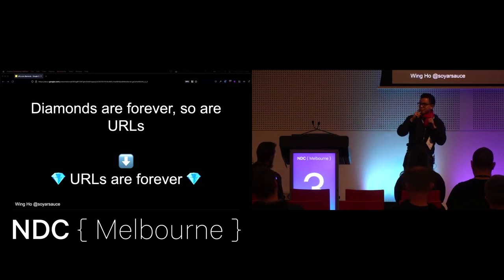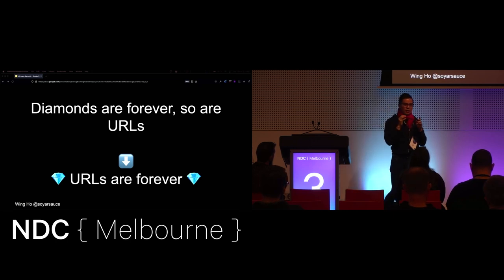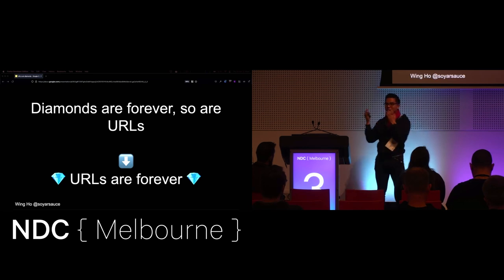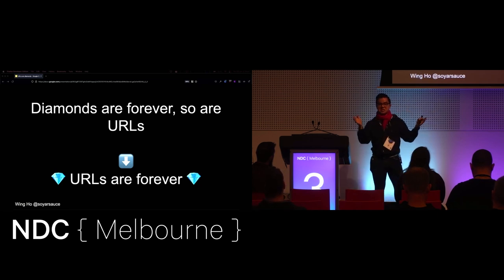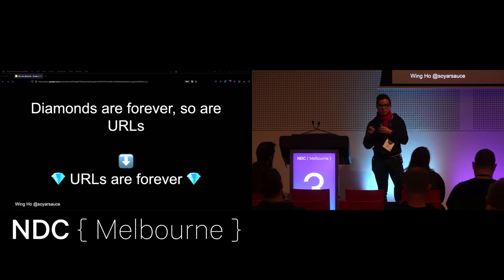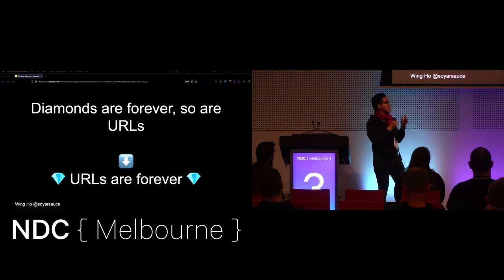The subtitle of the talk just reads: URLs are forever. They're not actually forever, but we should treat them as if they are forever. Because you could have a URL that you're serving content off of, you're going to send that to someone, that person's going to send it in an email message, put it in a PDF, send that PDF around. URLs just last forever.